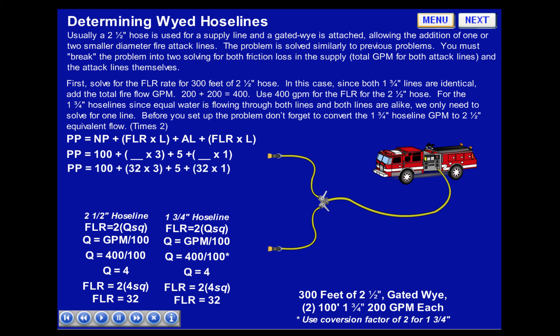Now let's plug in what we know: 100 PSI for fog nozzle pressure, 32 times 3 for the supply line friction loss, 5 PSI for the appliance loss, and 32 times 1 for the attack lines. Pump pressure equals 100 plus 96 plus 5 plus 32, for a total of 232 PSI.